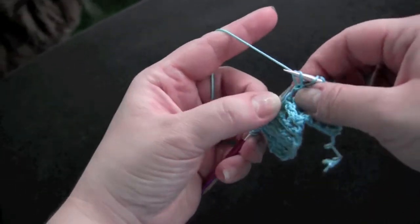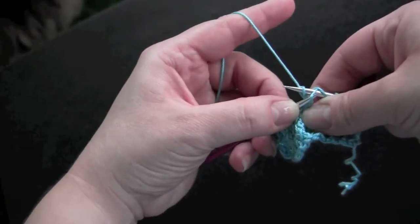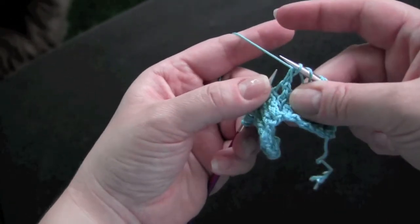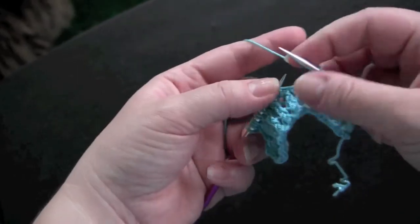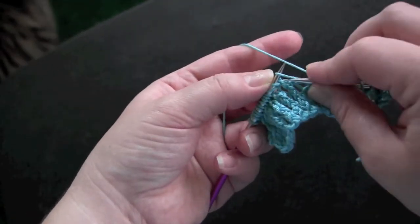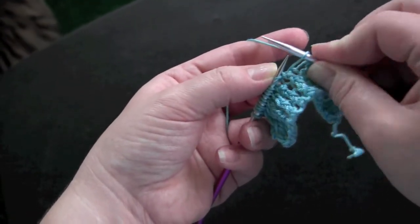The stitch that you're slipping is actually going to be a yarn over, and that might be a little bit awkward. You might have to watch that it doesn't slide off the needle.